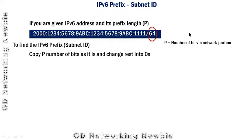To find the subnet ID, we copy the first p number of bits exactly as they are, and change the remaining bits in the IPv6 address to 0.